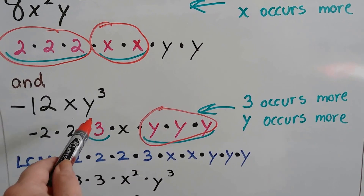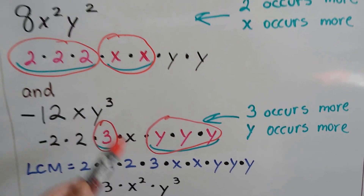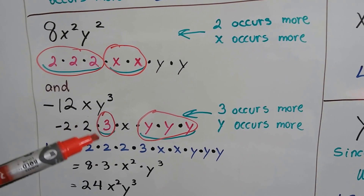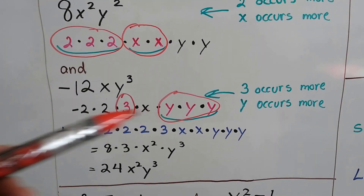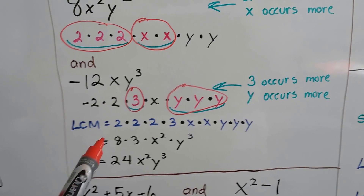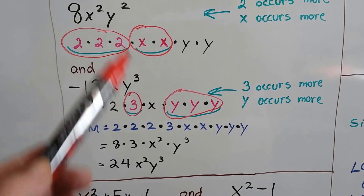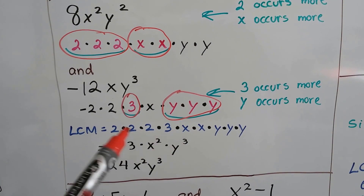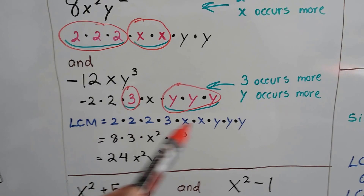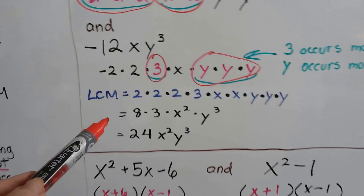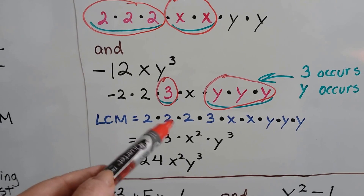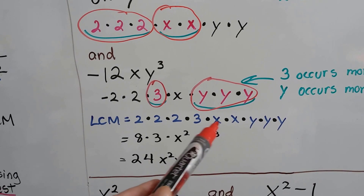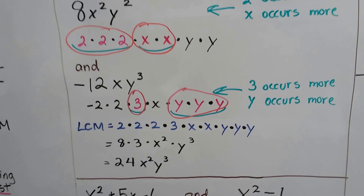The 3 only appears in the second expression, so we need that 3. Taking all the circled factors — the ones that occur most — we get 2 times 2 times 2 times 3 times x times x times y times y times y. Multiplying: 2×2 is 4, times 2 is 8, times 3 is 24. That gives us 24x²y³ as the least common multiple.